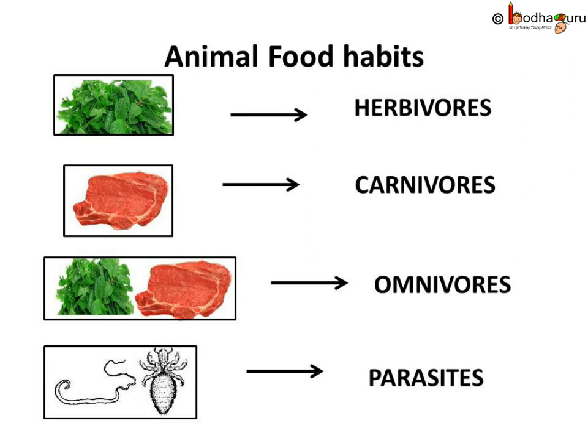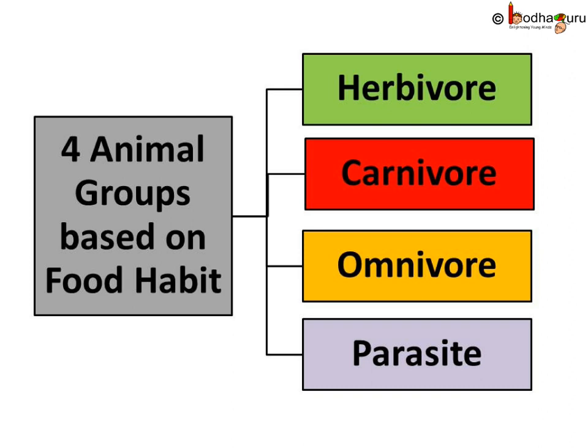Animals that live in or outside other animals' bodies and feed on them are called parasites. Based on food habits, animals can be divided into four groups: herbivores, that is plant-eating; carnivores, that is meat or flesh-eating; omnivores, that is both plant and meat-eating animals; and parasites, which live in and on other animals and feed on them.